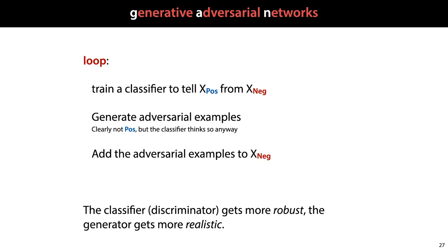Pretty soon, this bad news was turned into good news by realizing that if you can generate adversarial examples automatically, you can also add them to the dataset as negatives and retrain your neural network to make it more robust. Here's what that looks like for a binary classifier — let's say one that is trained to tell buses from non-buses. We start by training a basic classifier, generate some adversarial examples that are clearly not the positive class but are classified as such, and add these to the negative class and retrain. The classifier, also known as the discriminator, gets more robust, and the generator produces more and more realistic images. We can think of this as a kind of iterated two-player game, or an arms race. The generator tries to get good enough to fool the classifier, and the classifier tries to get good enough to tell the fake from the true images. And that's the basic idea of generative adversarial networks.